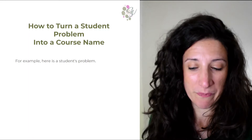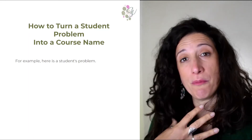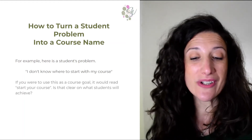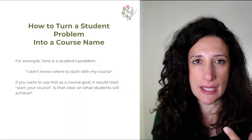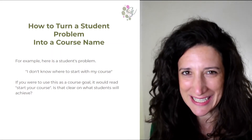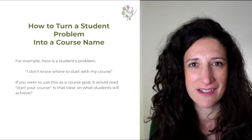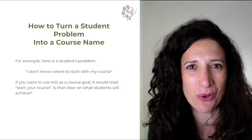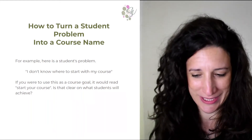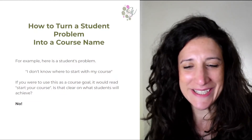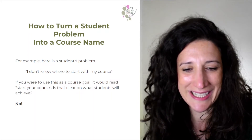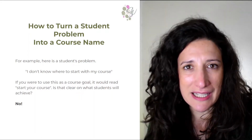Let's look at an example. A problem my students have is, 'I don't know where to start with my course.' I could easily turn that into a course name by saying, 'Start Your Course.' But it's not really clear on what someone's going to achieve. Would you sign up to an online course called 'Start Your Course'? What are you going to learn? What are you going to be able to do? How is it different from other courses? It's not clear, it's not going to attract students, it doesn't have any clarity — it's very ambiguous.